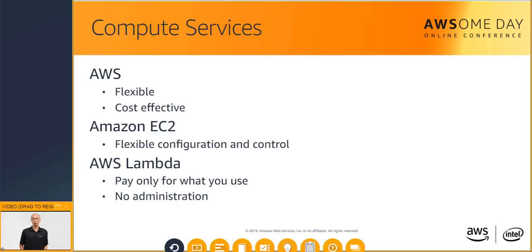AWS Lambda lets you run code without provisioning or managing servers. You pay only for the compute time you consume — there is no charge when your code is not running. With Lambda, you can run code for virtually any type of application or backend service: mobile, Internet of Things, streaming services, and more, all with zero administration.